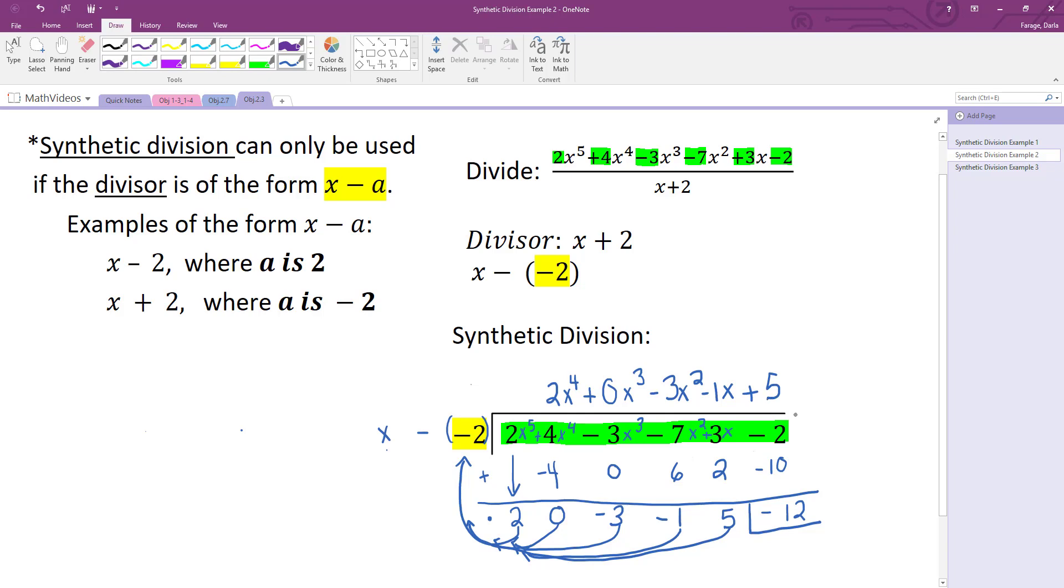And then your remainder is negative 12. So you can write minus 12 over your divisor, because you always put your remainder over your divisor. And since we're a negative, I went ahead and put a minus sign. If it was a positive, I would have put a plus sign. And so that is my result when I perform synthetic division.